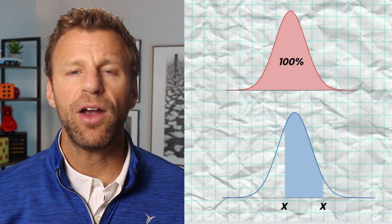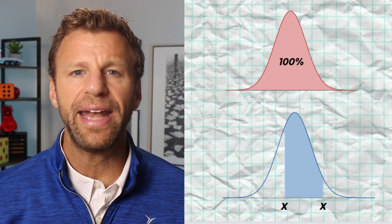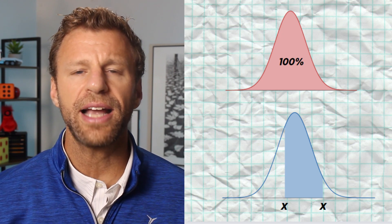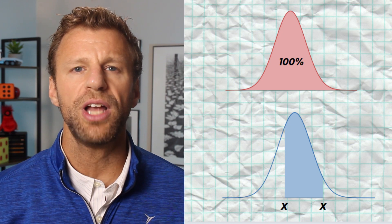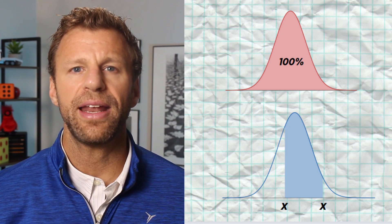Now, the area below the curve and above any interval on the x-axis represents the proportion of data in that interval. Density curves come in all different shapes, but one shape that is very common is called the normal curve.